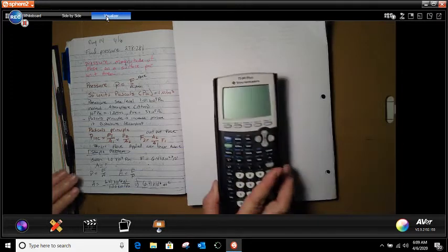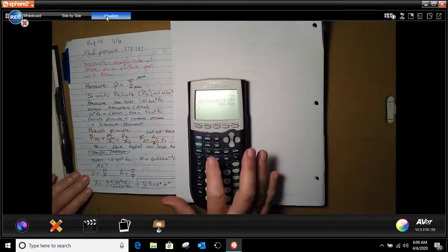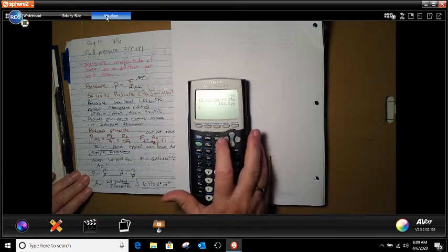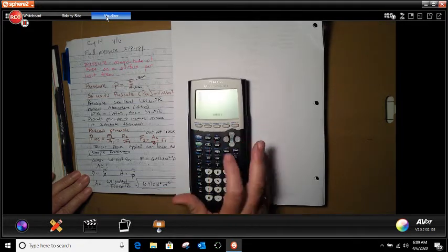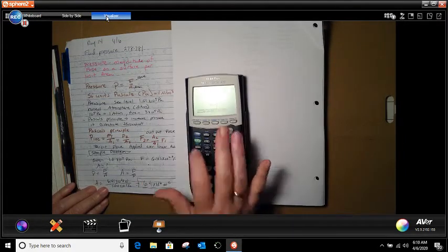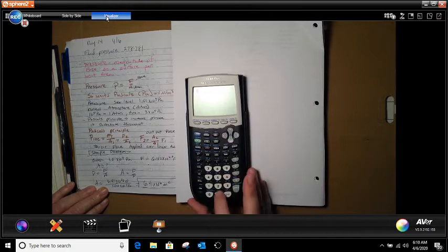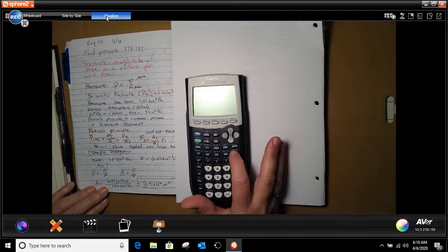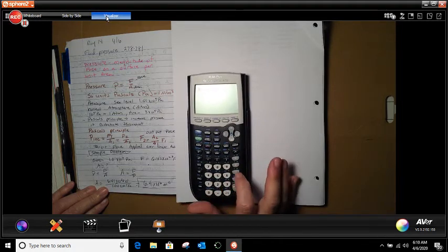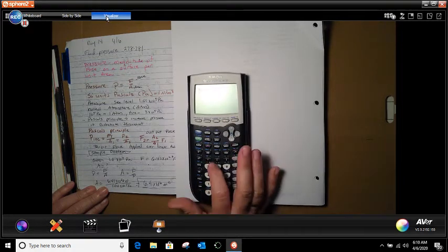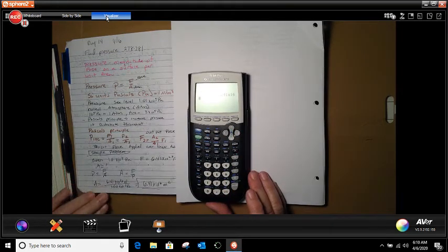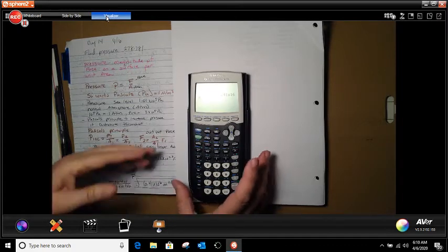So the only thing that we have to do here, first of all, check our mode. We want to take it out of degrees, which mine was. Check mine again. I'm all good. So now what I'm going to do is I'm going to do alpha y and I get 6.41 times 10 carat 23rd down 1.00 times 10 carat 7 over, enter. And I get 6.41 times 10 to the sixth.